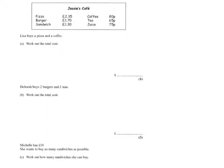So a pizza and a coffee. You can see from the table the pizza costs £2.35. The coffee costs 80p. So you must put that as 0.80.